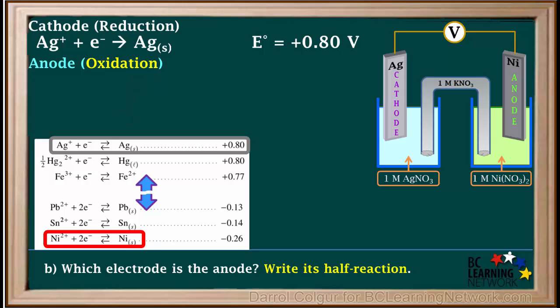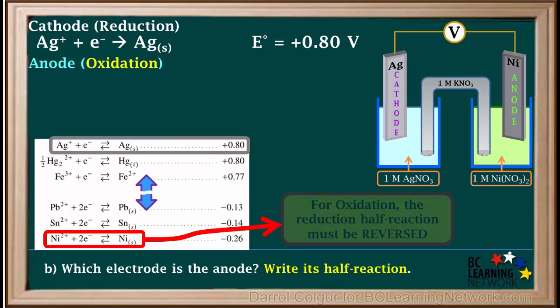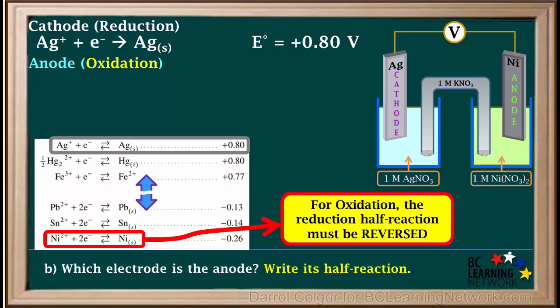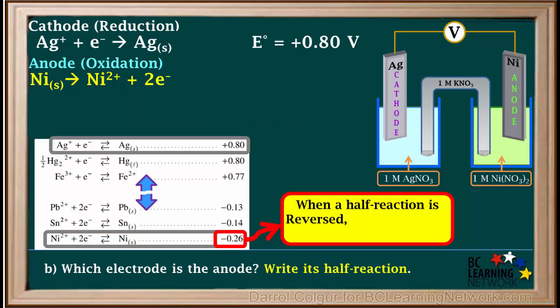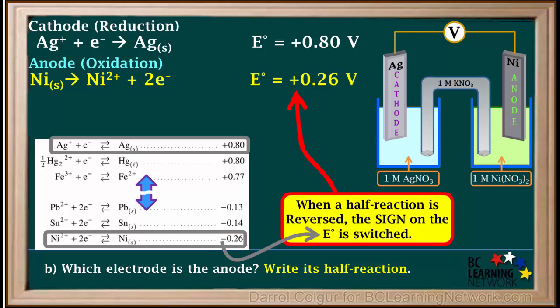The half reactions on the table are all written as reductions, so for oxidation the half reaction on the table must be reversed. Reversing this half reaction, we get: Ni(s) → Ni²⁺ + 2e⁻. When a half reaction is reversed, the sign on E⁰ is switched. On the table it is −0.26 volts, so the E⁰ value for this half reaction written as an oxidation is +0.26 volts.